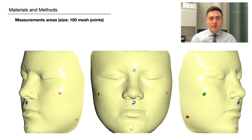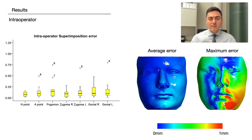In the next step, the distance between the superimposed surface images was measured at standardized areas of predetermined size, which you can see as colored dots on these surface images. This process was used to test the superimposition and segmentation error.